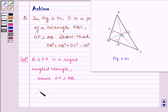Therefore, by Pythagoras theorem, OA² = AF² + OF². Let us name this as equation (1).